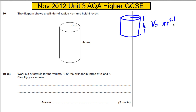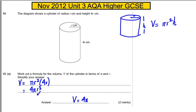The volume equals pi R squared times the height H. In this particular case, the radius is R but the height is 4R. So the volume is pi R squared multiplied by 4R, which simplifies to 4 pi R cubed — since R squared times R is R cubed, and pi times 4 gives 4 pi. So the volume is 4 pi R cubed.